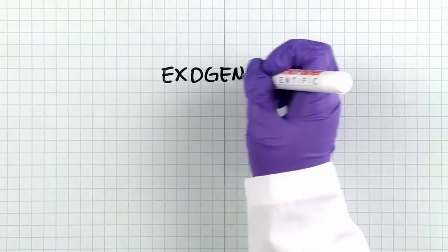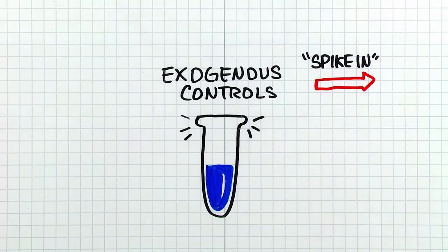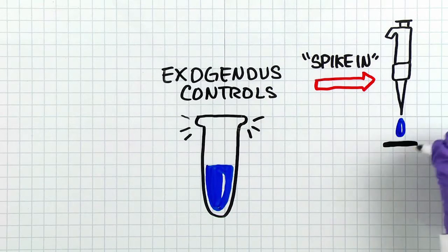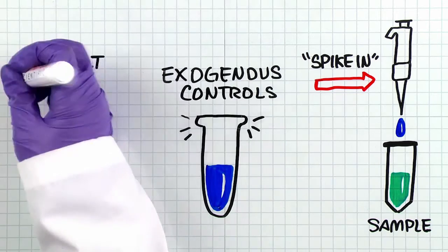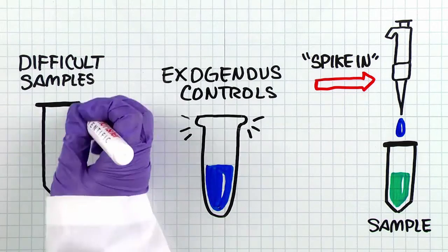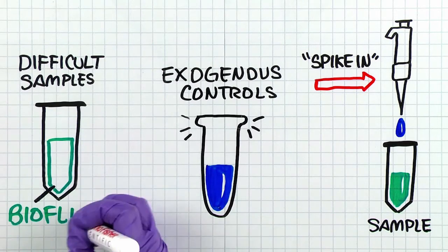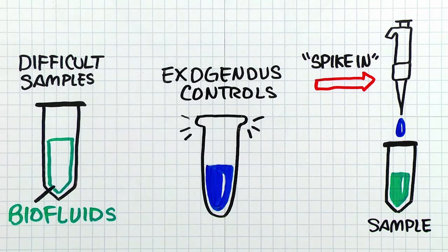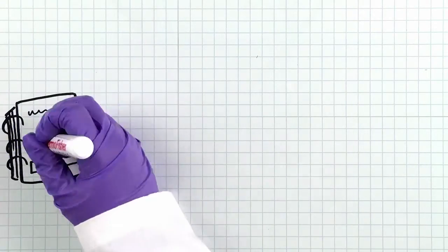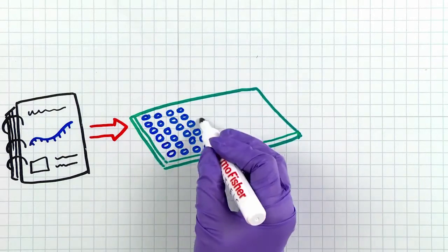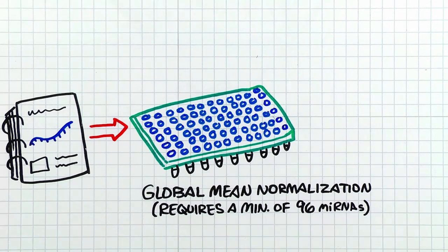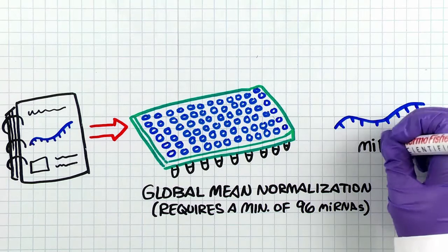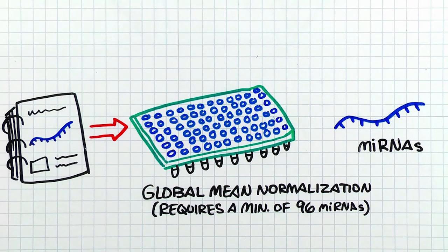Exogenous controls, or spike-ins, are typically used to monitor extraction efficiency or sample input amount for difficult samples, such as plasma, serum, or other biofluids. Large-scale microRNA expression profiling studies may utilize global mean normalization, which uses the calculated mean of all microRNAs in a given sample as the normalizer.